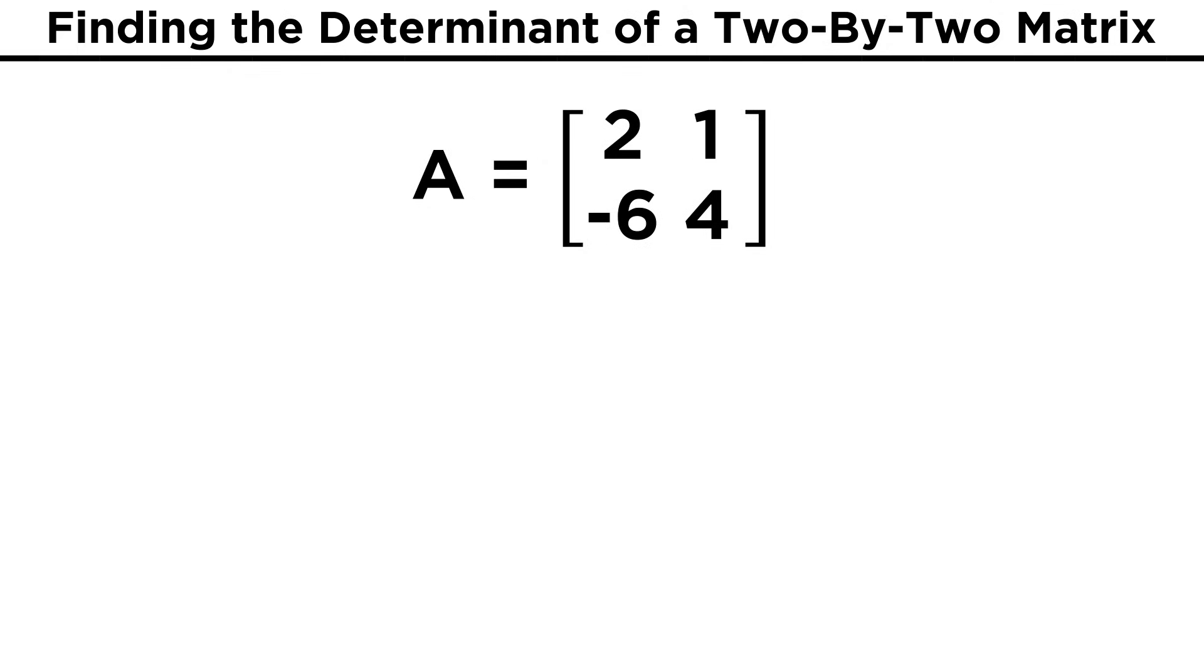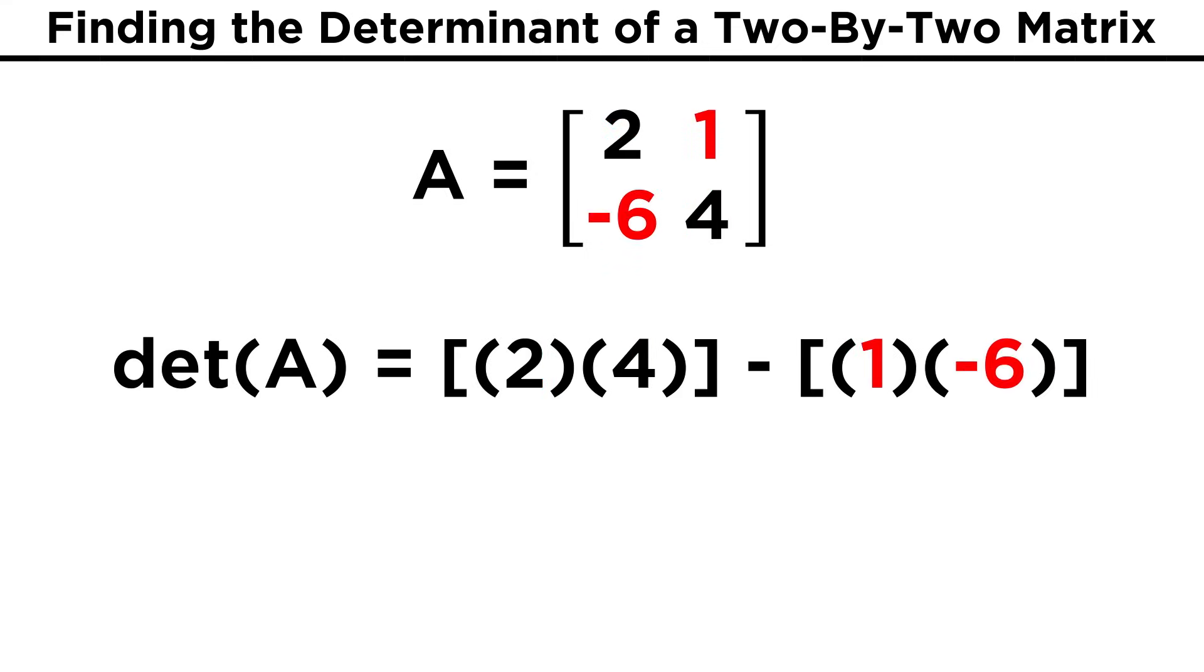So for example, a two by two matrix with entries 2, 1, negative 6, and 4 will have a determinant of two times four, minus one times negative six. This is eight minus negative six, or fourteen. This seems simple enough, and in fact, that's all there is to it when finding the determinant of a two by two matrix.